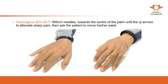For UE7, we use filiform needles until chi arrives. Although the textbook gives a specific location for UE7, in practice you press along the patient's hand and ask which spots feel most sensitive. Then you insert the needle at those sensitive points on both sides. If the patient doesn't have any sensitive points, you don't need to insert all the needles.